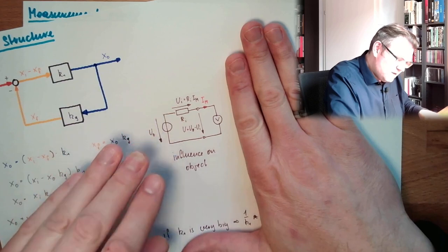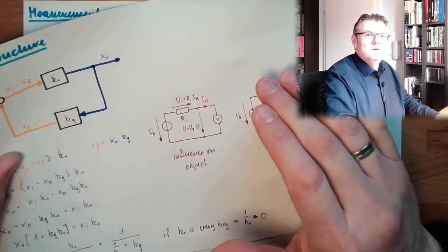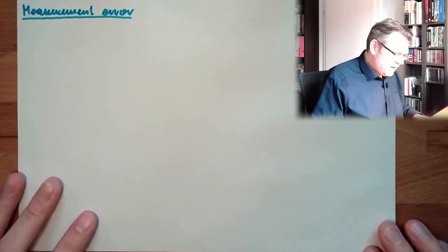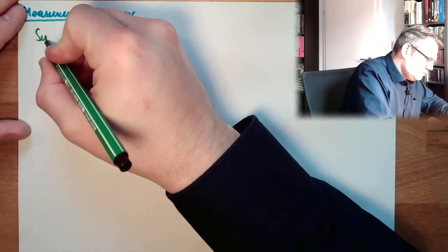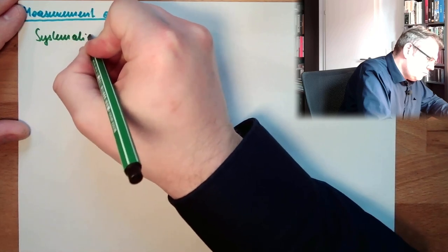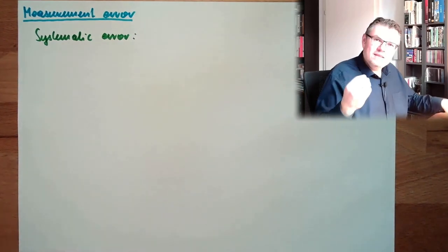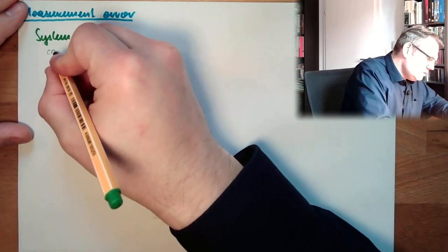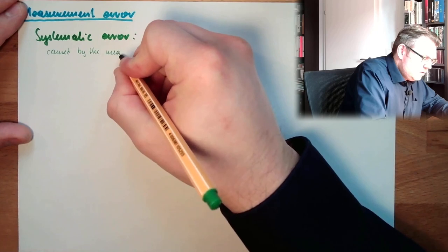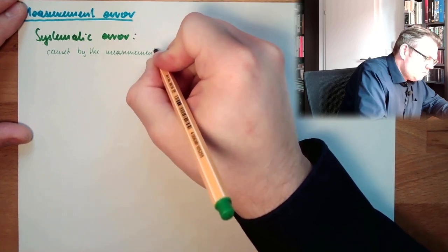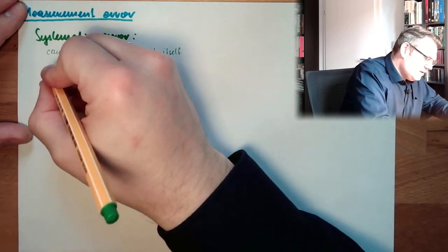Such things which are inside the measurement system and cannot be avoided — they are simply there, caused by our measurement and the system itself — these errors are called systematic errors. They cannot be avoided.